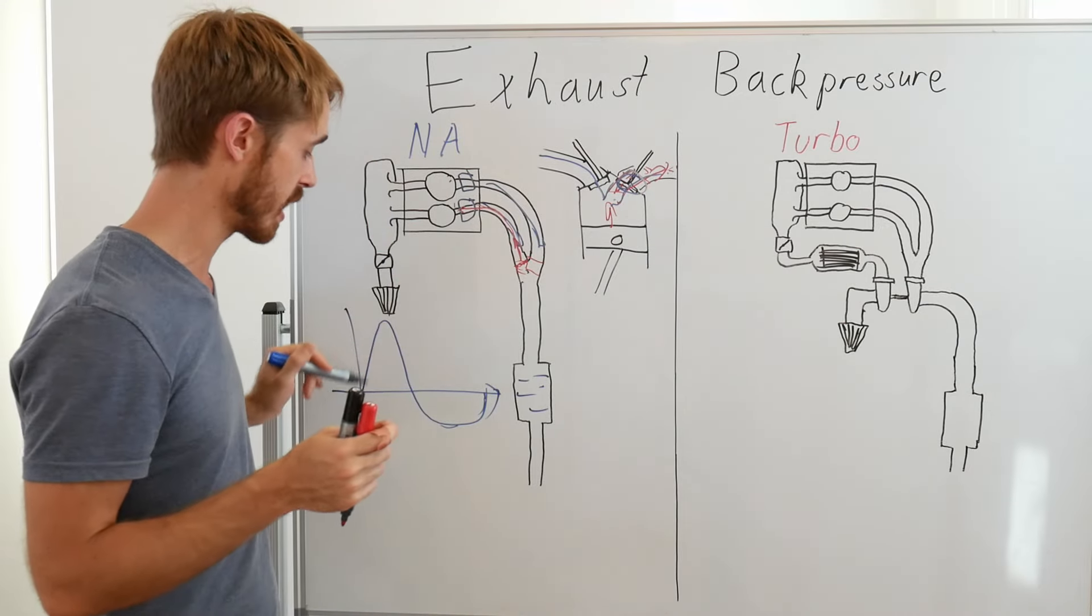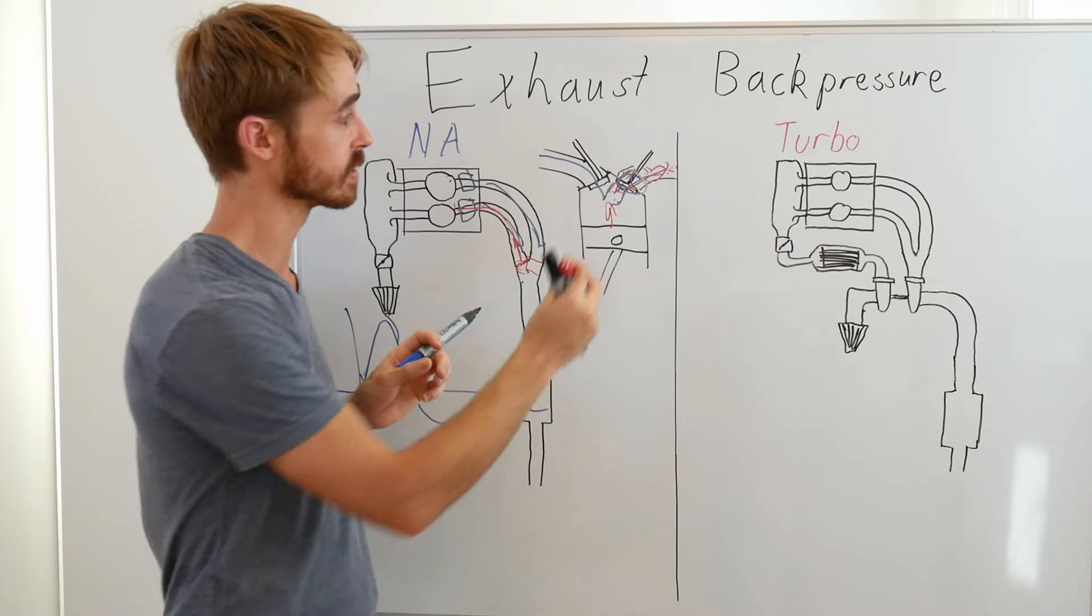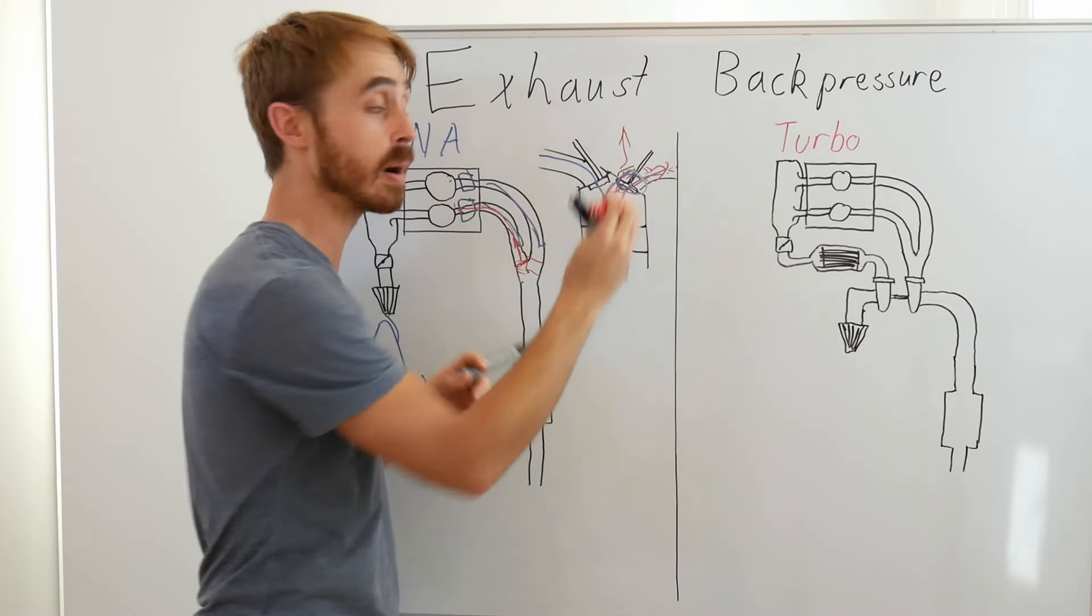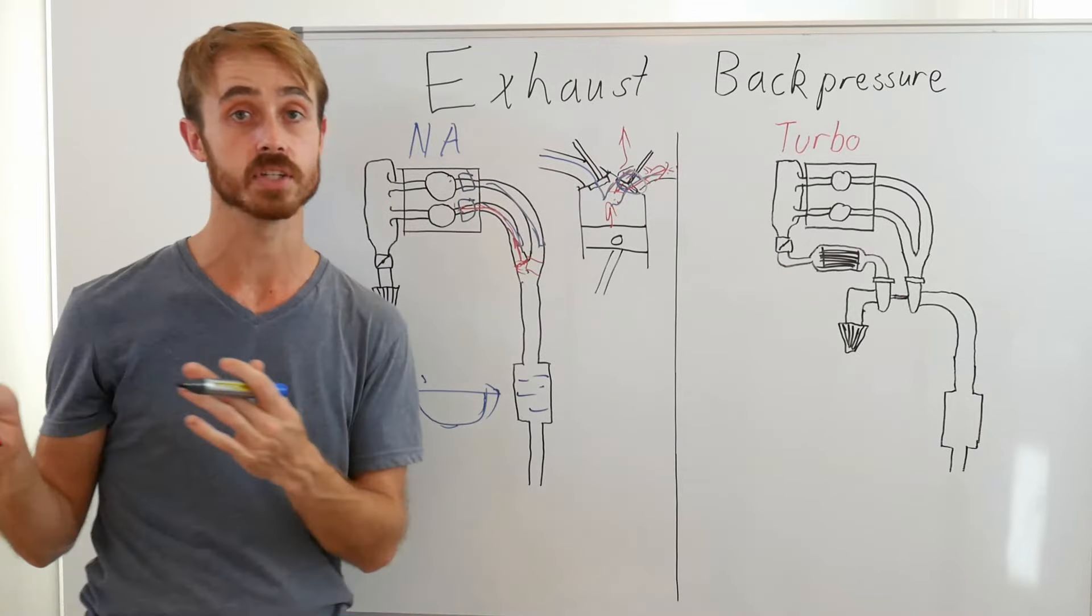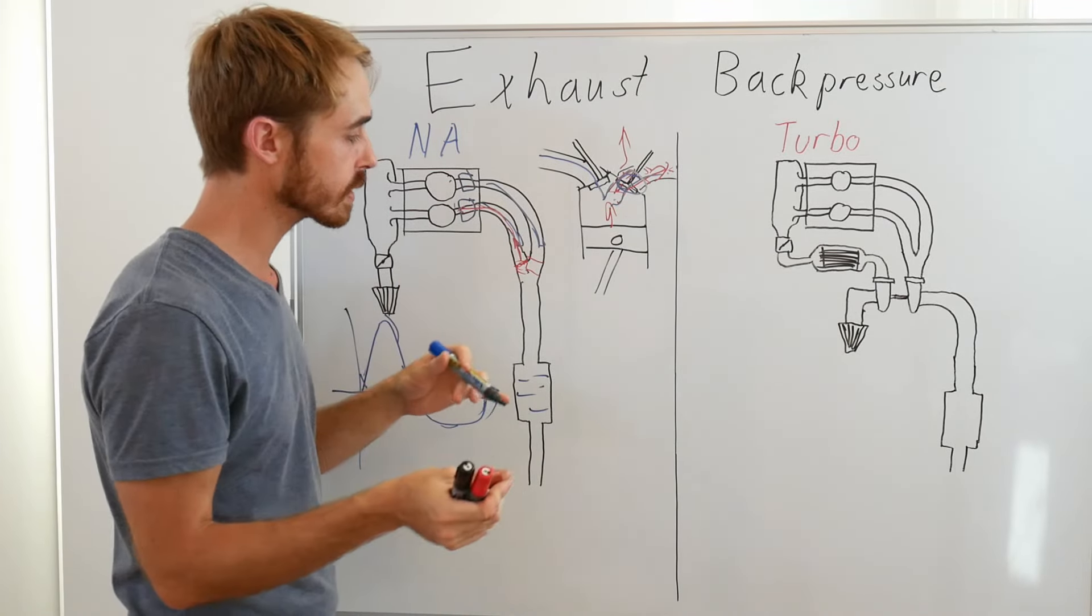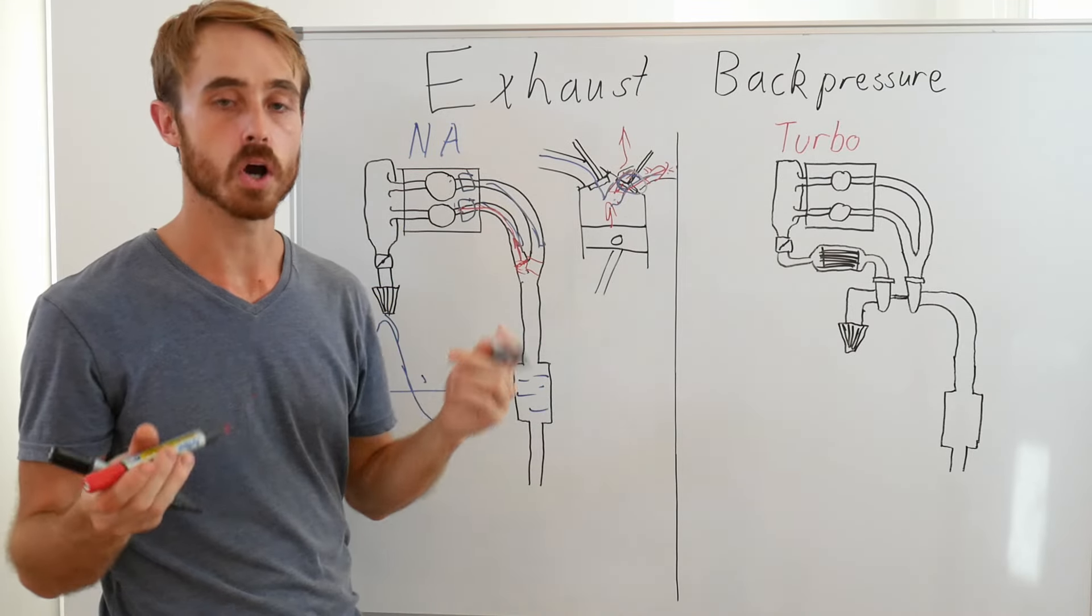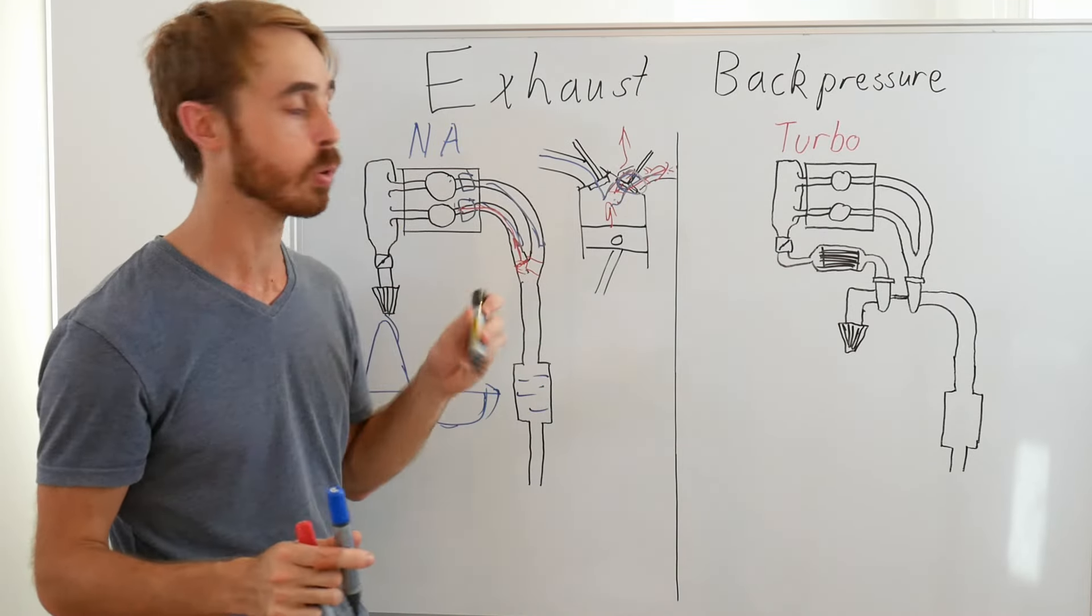Now that means that as the engine speed goes up, your tuned length runner is now going to deliver the pulse at a different point in time. So you'll end up with a compression pulse on the back side of here, which means the pressure will actually go up and you'll get worse scavenging than you previously had. So what's the consequence of that? Basically if you have your tuned length exhaust runners, your torque curve is going to be optimized for a more specific point.